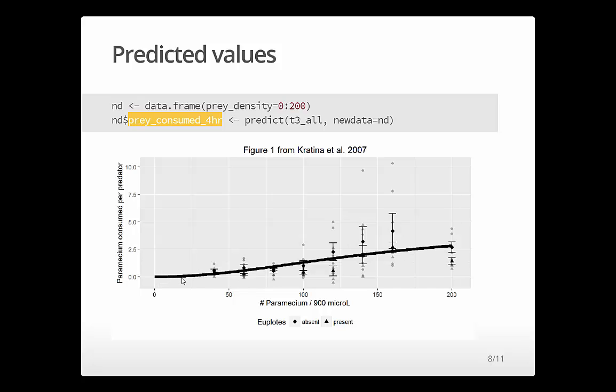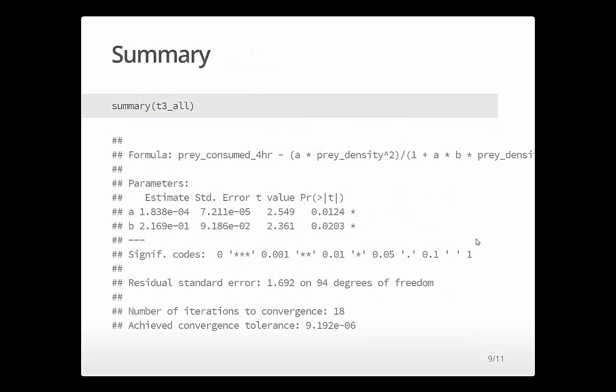So here's what I mean by a Type 3 function. Initially, the rate is increasing, the slope is getting steeper and steeper and steeper until somewhere here in the middle when it turns around and starts to get flatter and flatter and flatter. And if we kept going, it would eventually asymptote.